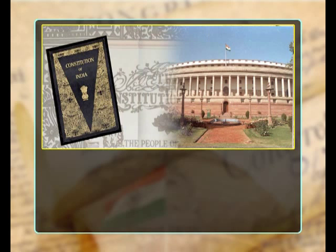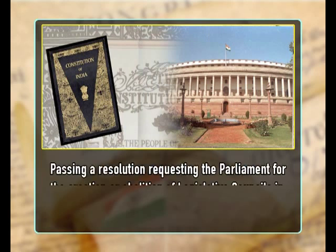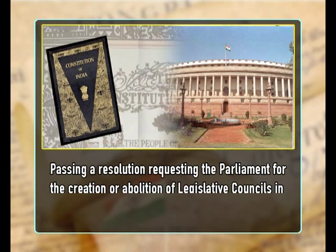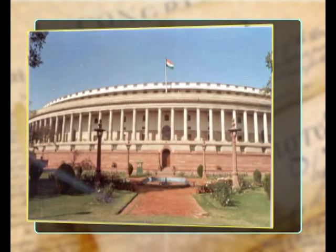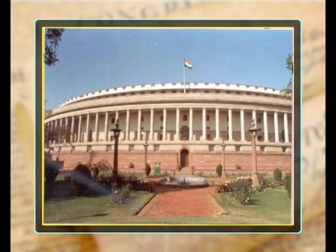The power to initiate an amendment to the constitution lies with the parliament, except in one case — passing a resolution requesting the parliament for the creation or abolition of legislative councils in the state. Here also, the parliament can either approve or disapprove such a resolution, or may not take any action on it.